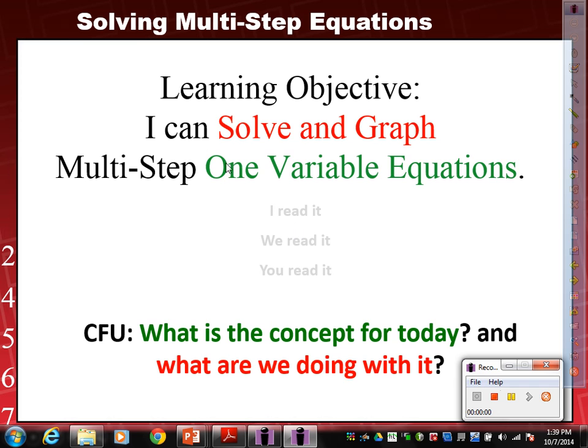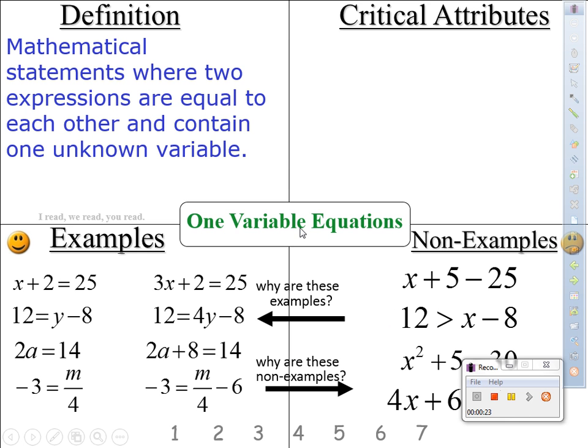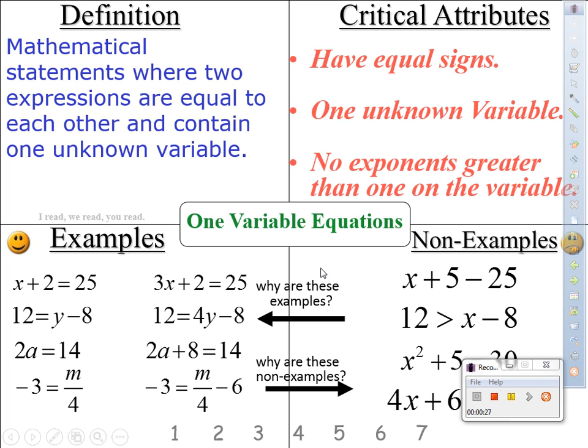So our objective for today: I can solve and graph multi-step one-variable equations. Read together. One, two, three. I can solve and graph multi-step one-variable equations. Critical attributes need to have an equal sign, one variable only, and no exponents greater than one on the variable.